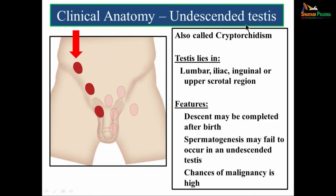Undescended testis — also called cryptorchidism — is where the testis may lie in the lumbar, iliac, inguinal or upper scrotal region. In some cases the descent may be completed after birth. Spermatogenesis may fail to occur in an undescended testis and the chances of malignancy are very high.